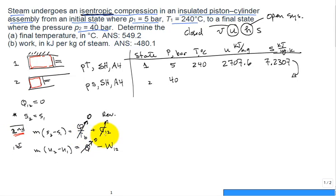Using the second law, we conclude because it's isentropic that S1 equals S2. So we can just write that right here: 7.2307. Now knowing the pressure and entropy - 40 bar and that entropy - can we find the temperature and internal energy?